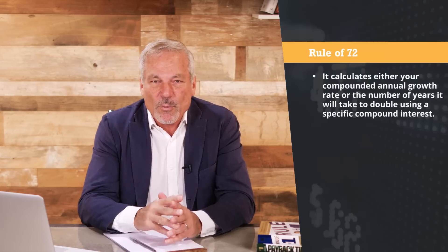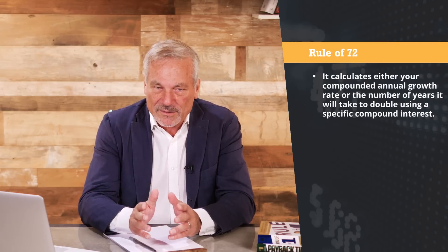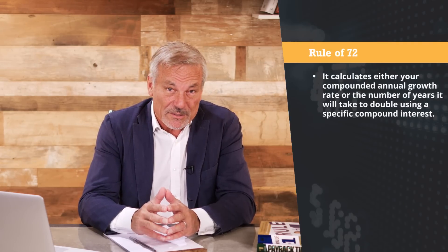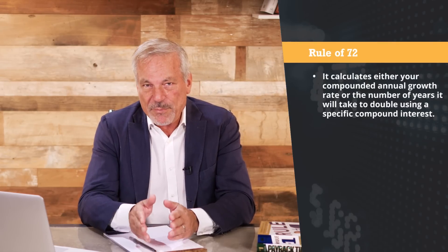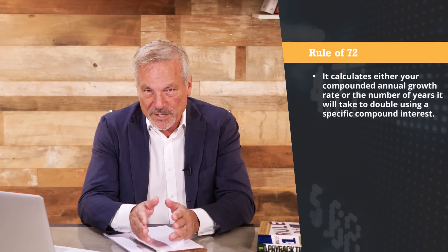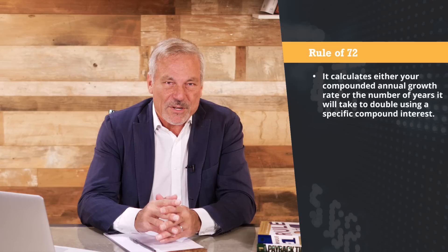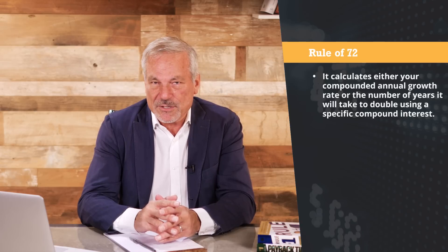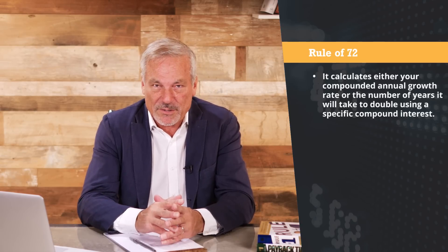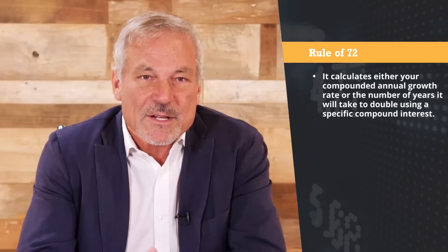What is the Rule of 72? It's basically a straightforward mathematical shortcut you play in your head that calculates either your compounded annual growth rate or the number of years it's going to take you to double your money using a specific compounded regular growth rate.